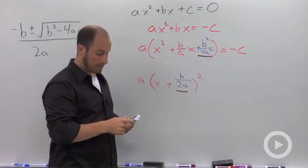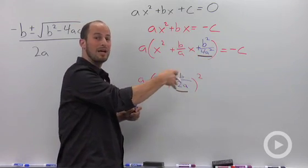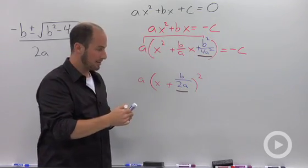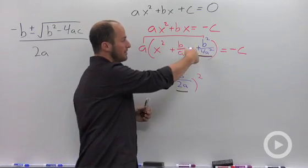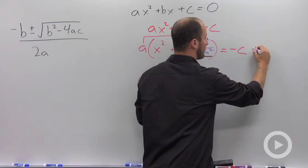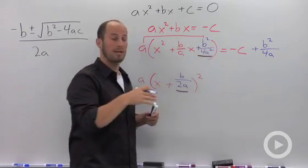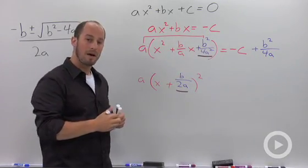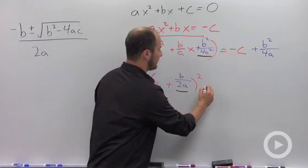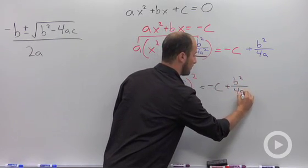Remember that we have to distribute this coefficient in. This a, we're adding b squared over 4a squared inside the parentheses, but what we really are doing is adding an a times that to that entire side. So we added the b squared over 4a squared to this side. Multiplying it by a, we have to add it to the other side. So that's plus b squared over 4a. One of those a's cancel when we multiply it in. All right, so we have a times this quantity squared is equal to negative c plus b squared over 4a.